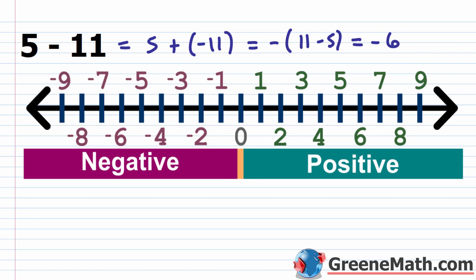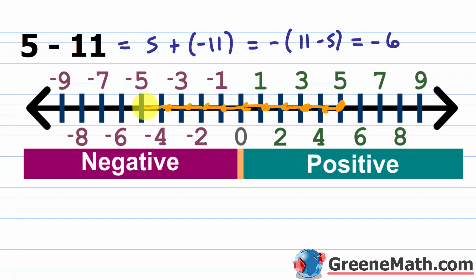On the number line: starting at 5, first we spend 5, moving 1, 2, 3, 4, 5 units to the left and arriving at 0 — no more money. Then we go another 6 units to the left, counting 1, 2, 3, 4, 5, 6, to end up at negative 6. So starting with 5, adding negative 11 or taking 11 away means moving 11 units to the left, ending at negative 6 — meaning I owe $6 to the bank.